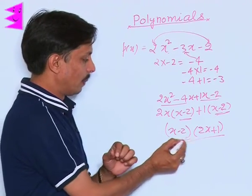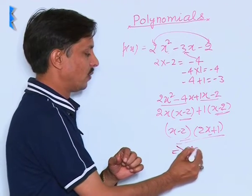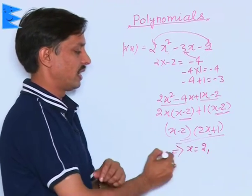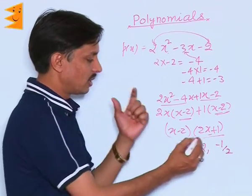With the help of this, what it implies we get the values of x which can make it 0 are 2 and -½.